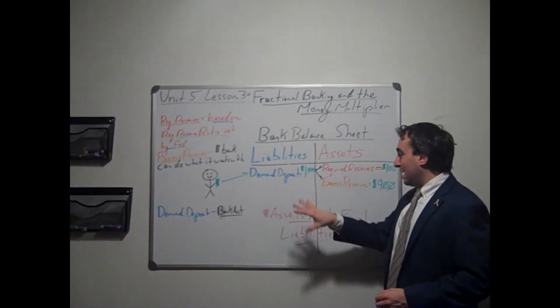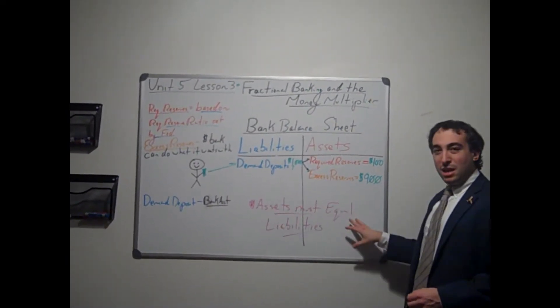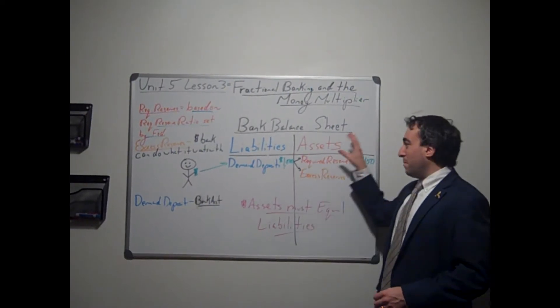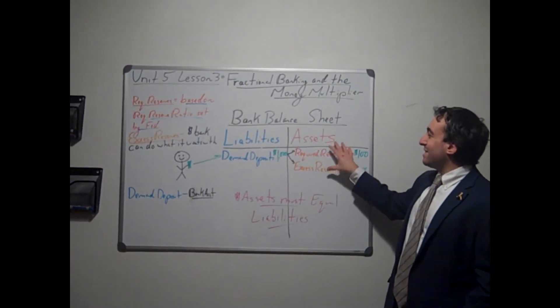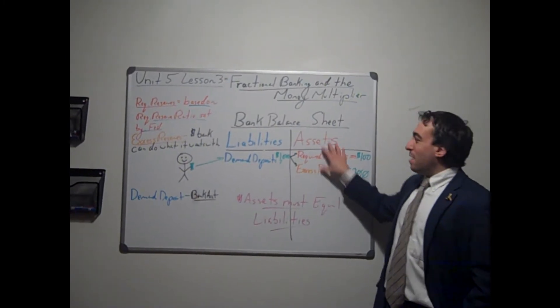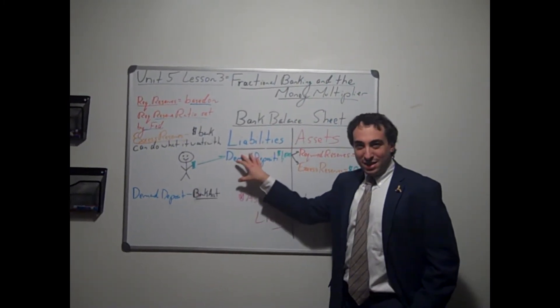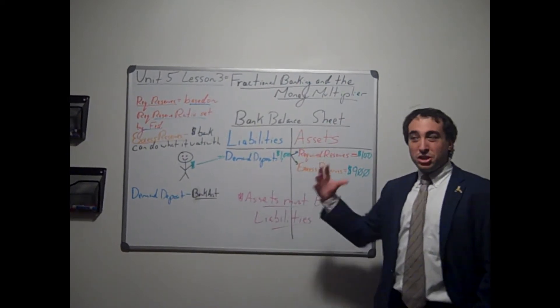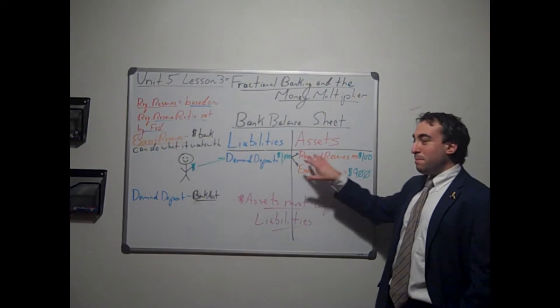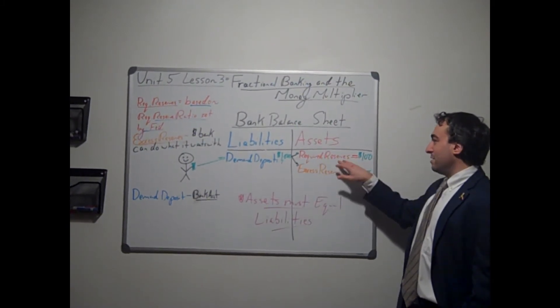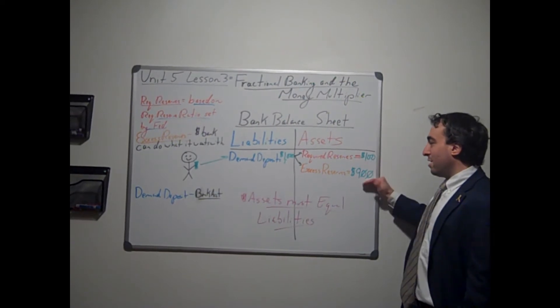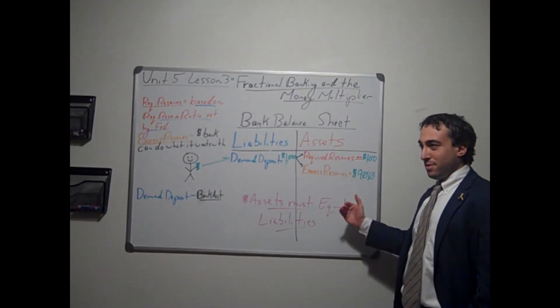Or they can turn those excess reserves into loanable funds, money they can loan. So a synonym you're going to see with excess reserves later on in the unit is loanable funds, money the bank can loan. Just to review, assets must equal liabilities. In the bank's balance sheet, the bank's assets are derived from the liabilities. The demand deposit, that $1,000, becomes the bank's assets. And so now the bank has $100 in required reserves and the extra $900 in excess reserves.